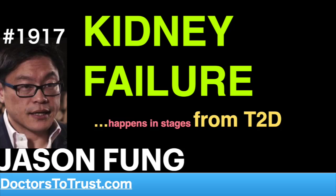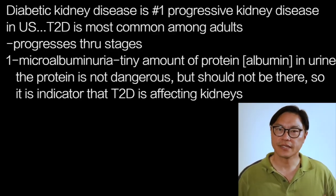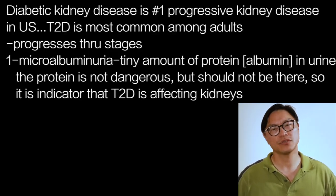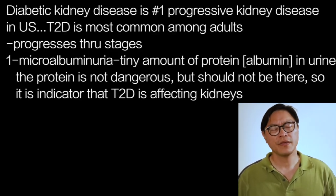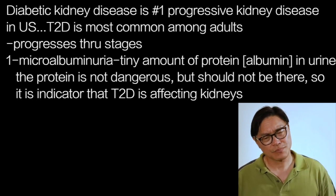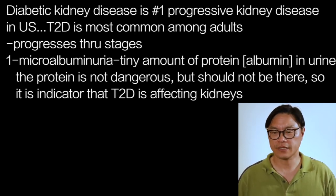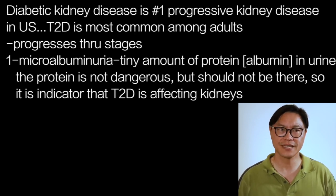Diabetic kidney disease is the most common form of progressive kidney disease in the United States. Most of diabetes is type 2 diabetes, which is the one that typically happens in adults, and it progresses through a very stereotyped number of stages.